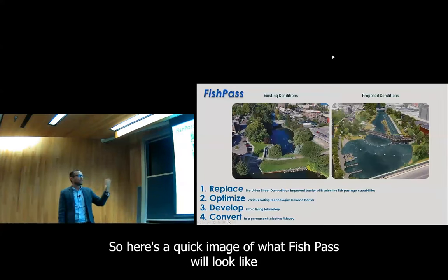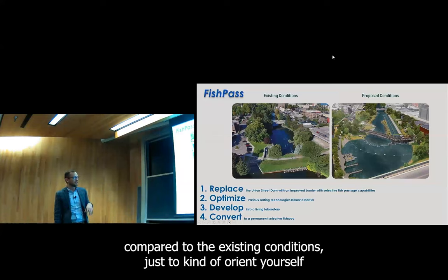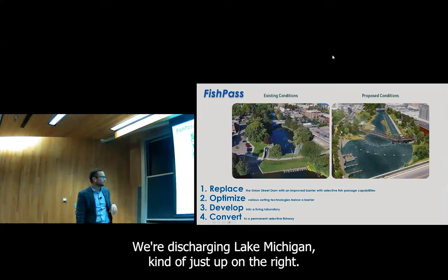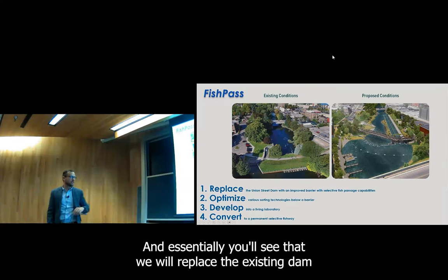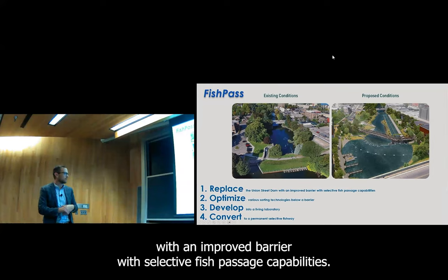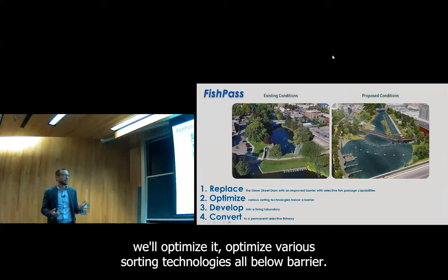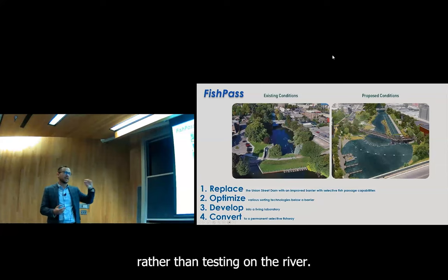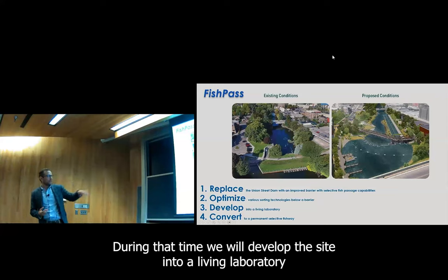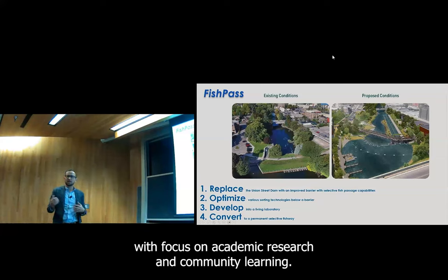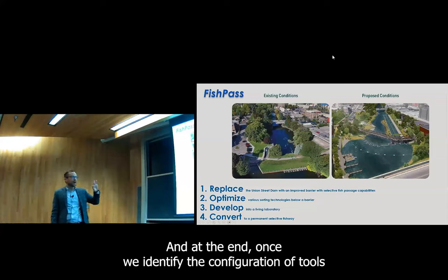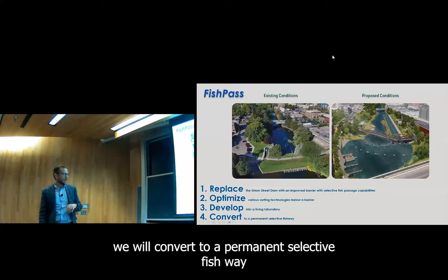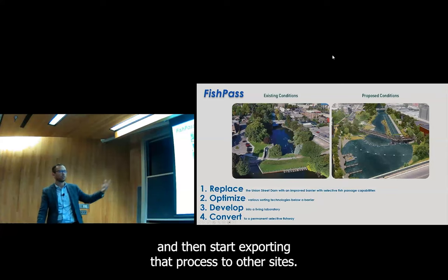The long-term goal of Fish Pass is to provide selective passage so you can fully connect the Boardman River with its receiving water of Lake Michigan. Fish Pass will replace the existing dam with an improved barrier with selective fish passage capabilities. Once constructed, we'll optimize various sorting technologies, all below a barrier — so we're testing the technologies rather than testing on the river. During that time, we'll develop the site into a living laboratory with focus on academic research and community learning. At the end, once we identify the configuration of tools that work, we'll convert it to a permanent selective fishway and start exporting that process to other sites.